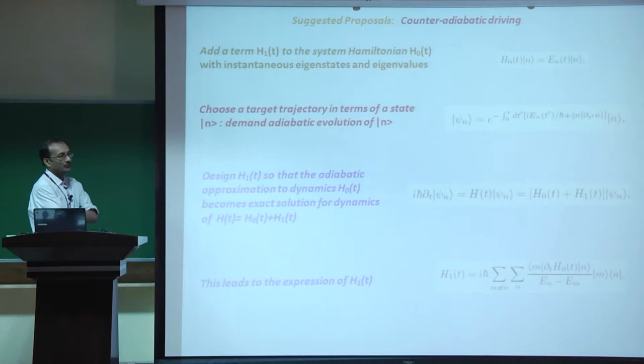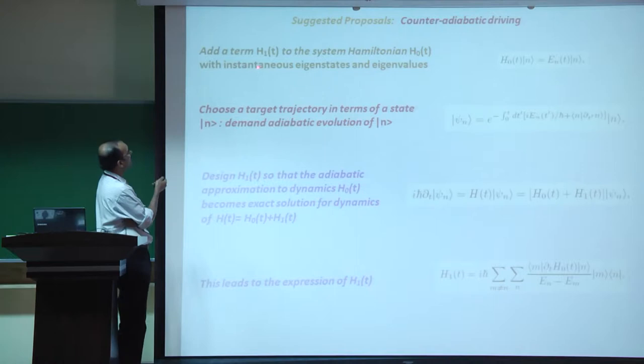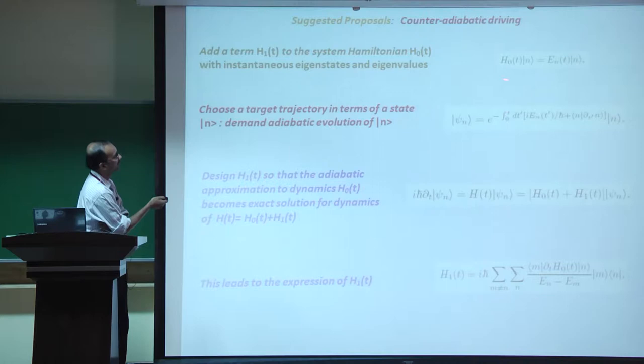One proposal in this field was first suggested by Berry, whose idea was the following. Imagine you have a system Hamiltonian H_0(t) with instantaneous eigenstate |n⟩ at time t. Berry's idea was to design an H_1 so that the adiabatic approximation to the dynamics of H_0 becomes the exact solution for the dynamics of H(t).